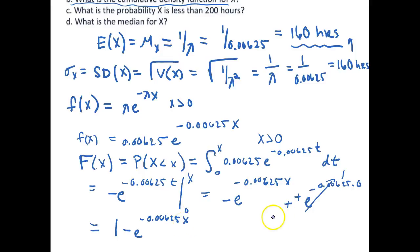So our cumulative density function will be 1 minus e to the negative 0.00625 X. And I just manipulated this to make it kind of a little bit nicer format. Alright so that is my cumulative density function.